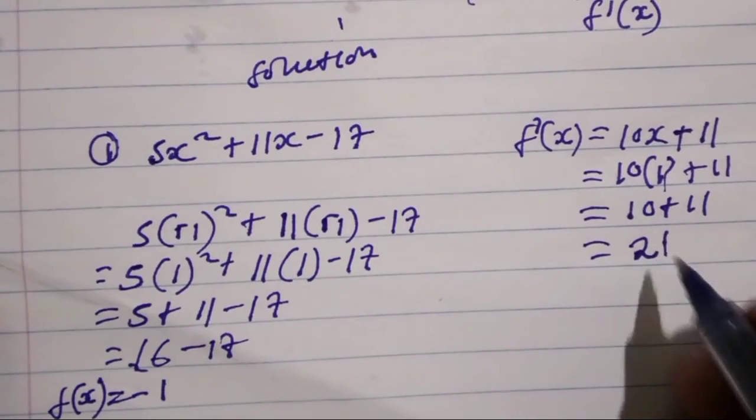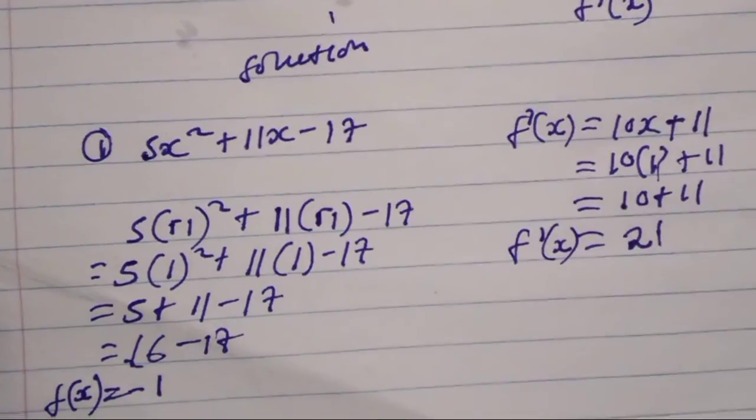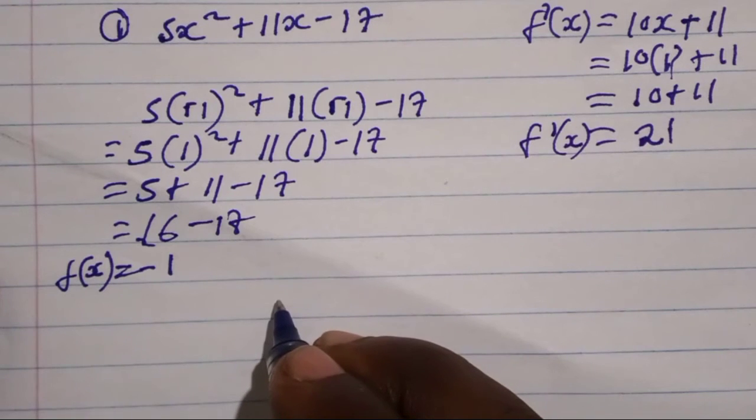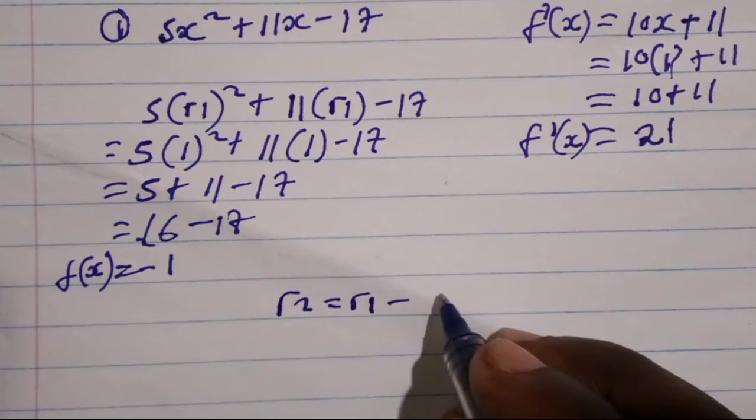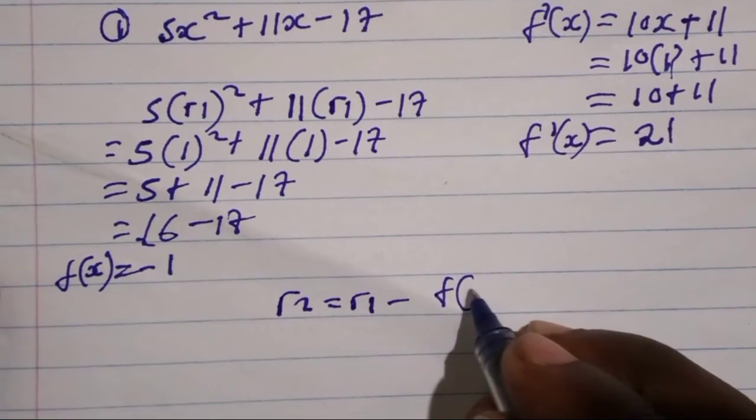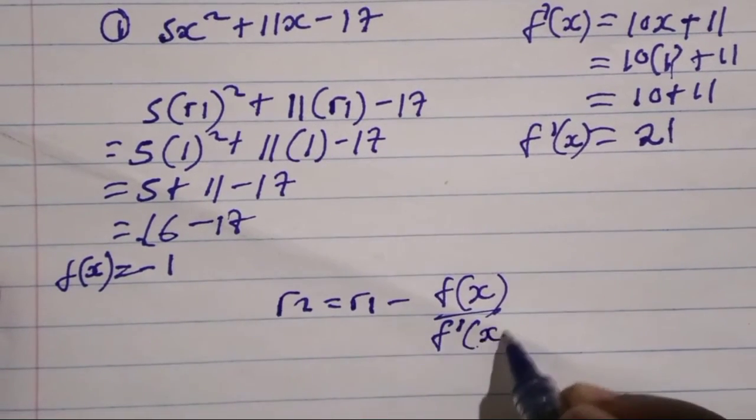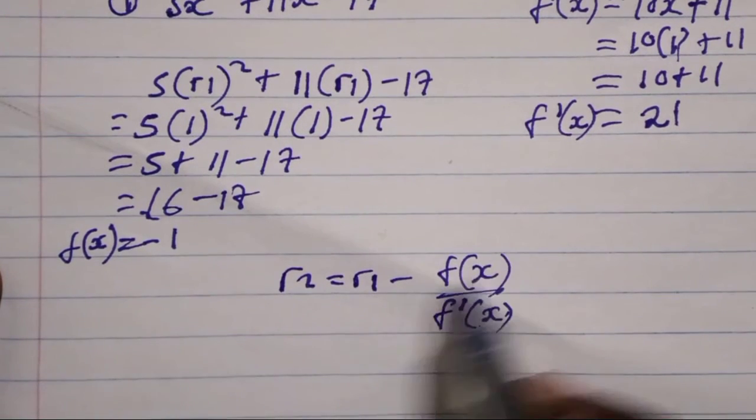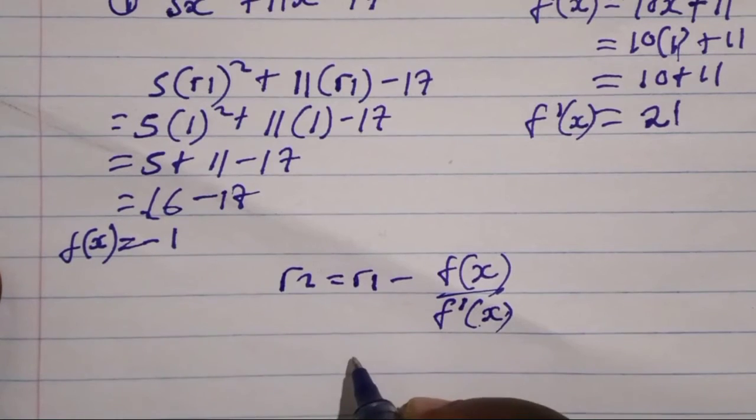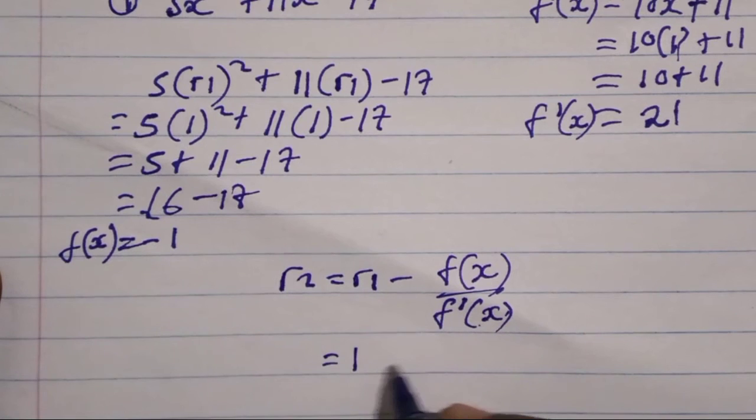We are finding the second derivative of the first derivative. Now let's apply the formula which is r2 equals r1 minus the function over the derivative. When we substitute, because we have 1 for the function it is negative 1. r1 is 1 here before we substitute, which equals 1 minus